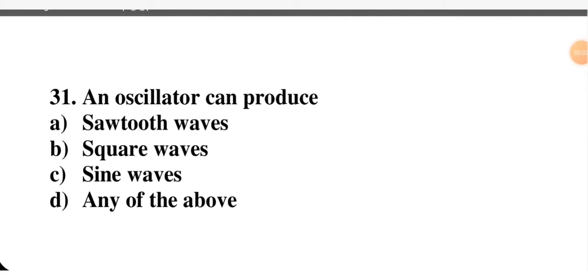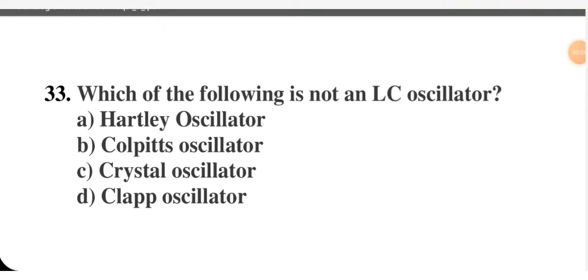An oscillator can produce — sawtooth wave, square wave, sine wave, or any of the above? If it is an oscillator, it can generate any type of wave, so option D — any of the above — is correct. Regarding which oscillator uses L and C: Hartley, Colpitts, and Clapp oscillators use L and C, but the crystal oscillator uses a crystal. So the crystal oscillator is not an LC oscillator — option C is correct.